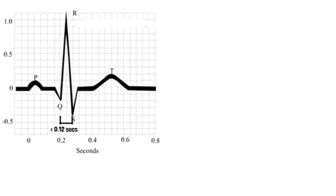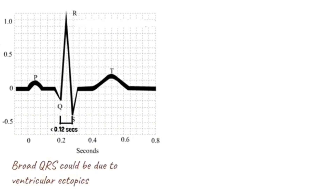If the QRS duration is greater than this value, then the rhythm might be originating from the ventricular myocardium. Having assessed the QRS duration, the rhythm strip and ECG should then be inspected carefully for the presence of atrial activity. As P waves correspond with atrial depolarization, this can be done by looking for the presence or absence of P waves.